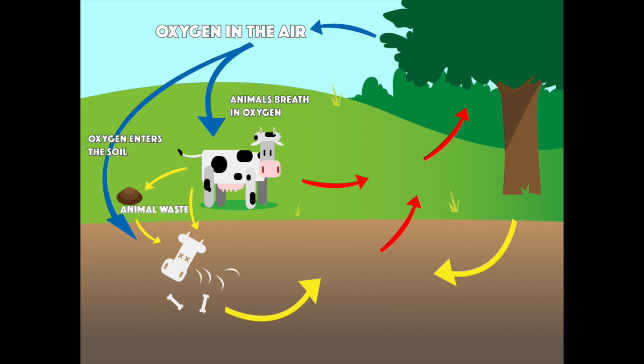Animals breathe in oxygen to live. This is half of respiration. When animals release or breathe out, carbon dioxide is generated. This is the other half of respiration.